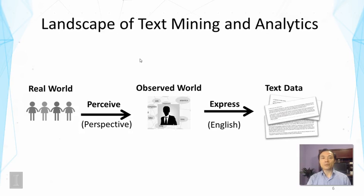This slide shows the process of generating text data in more detail. More specifically, a human sensor or human observer would look at the world from some perspective. Different people would be looking at the world from different angles and pay attention to different things. The same person at different times might also pay attention to different aspects of the observed world. The human sensor would perceive the world from some perspective and form a view of the world, which can be called the observed world. This would differ from the real world because of the perspective the person has taken.